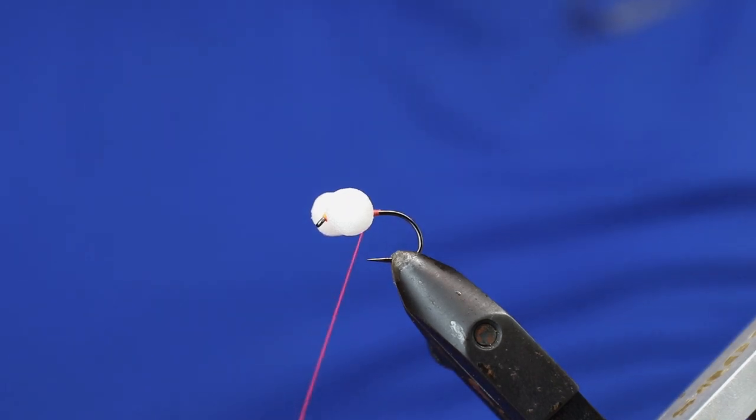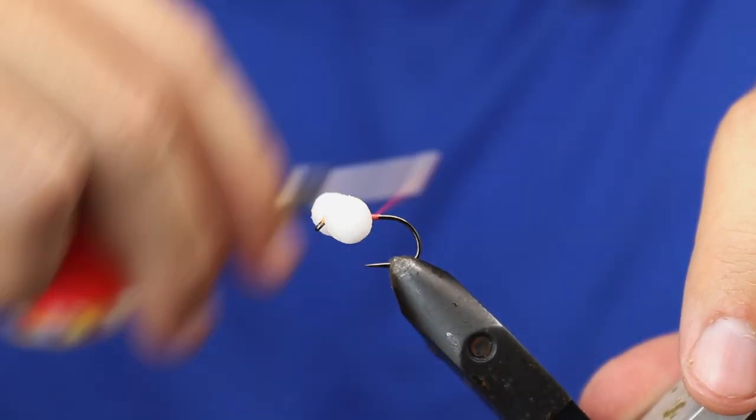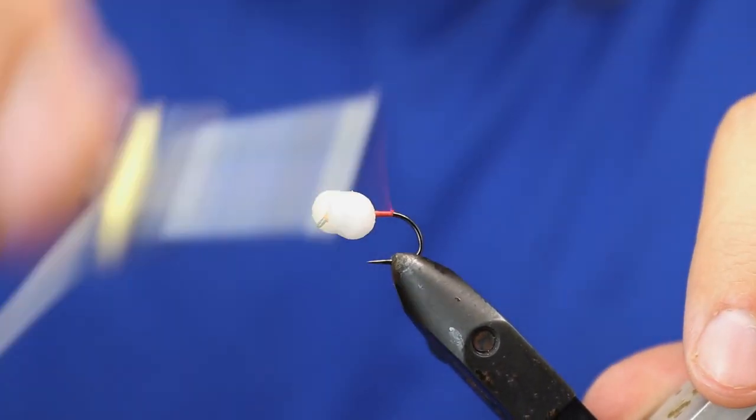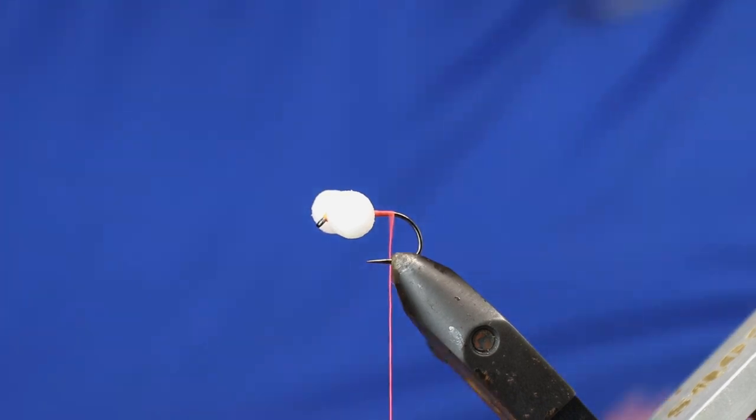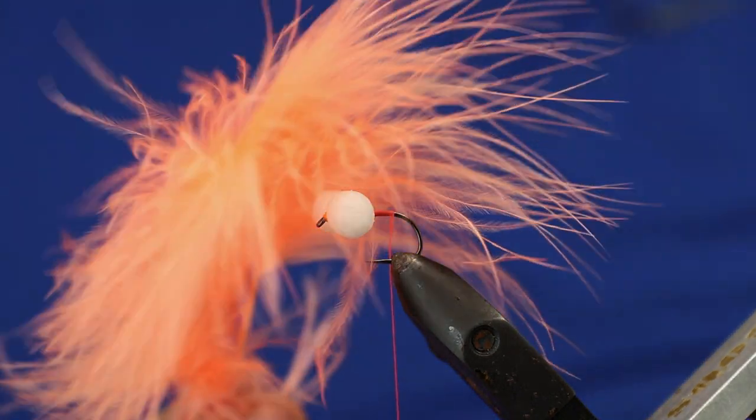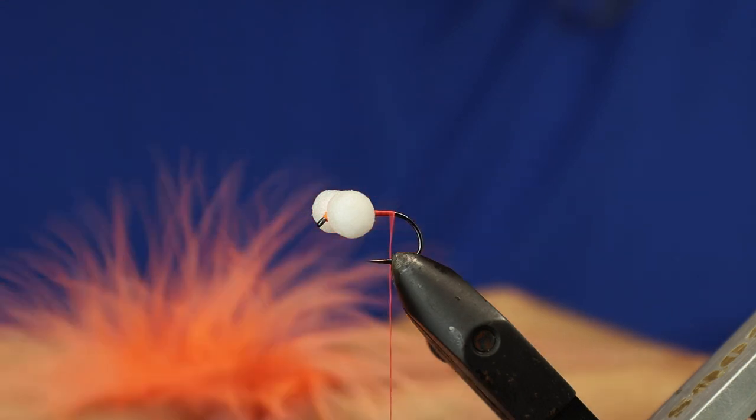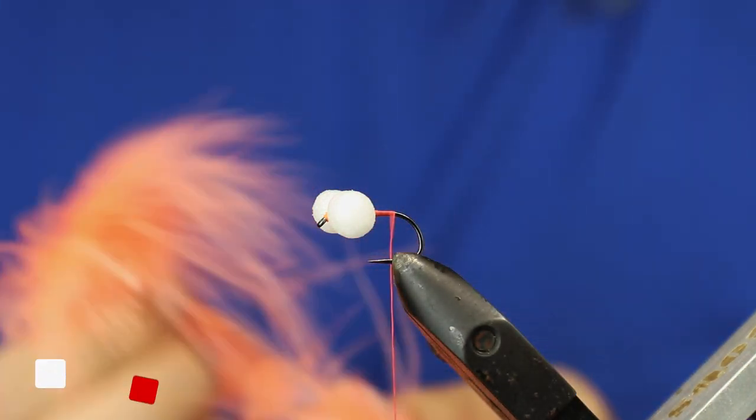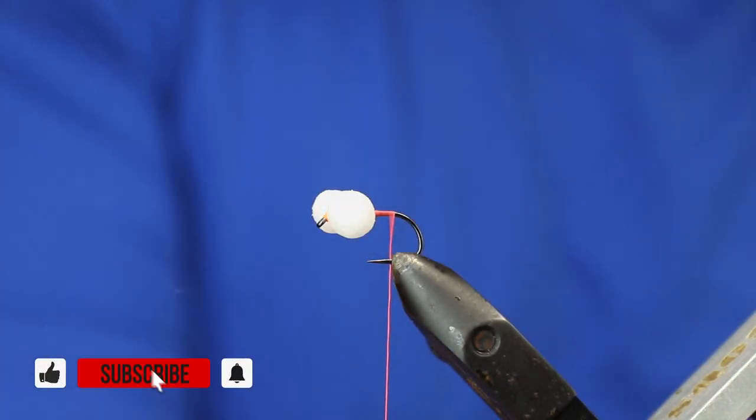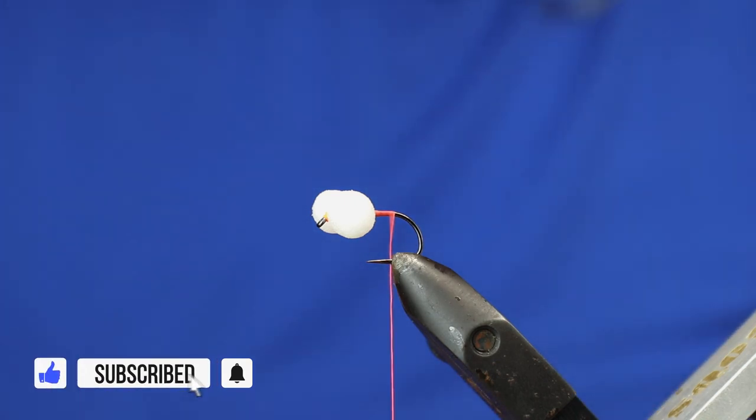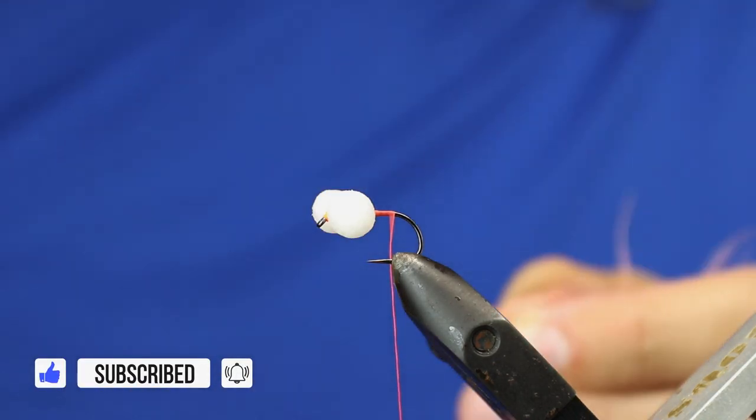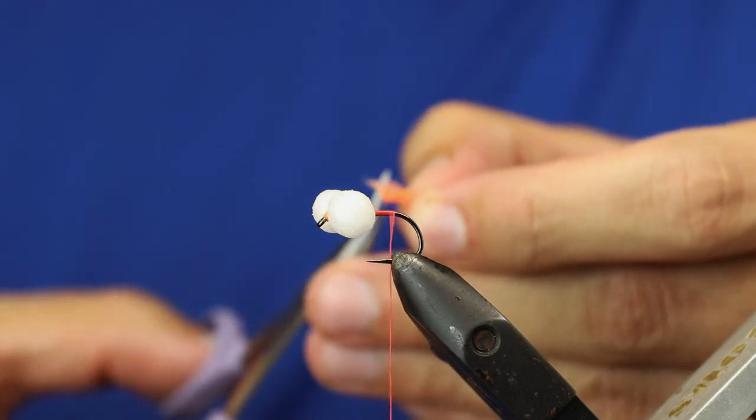Carry on by just working the thread down and then come in with some marabou. I've picked a fairly strong coral color here. I'm going to take about one inch, wet the end, and cut off the plume tips.